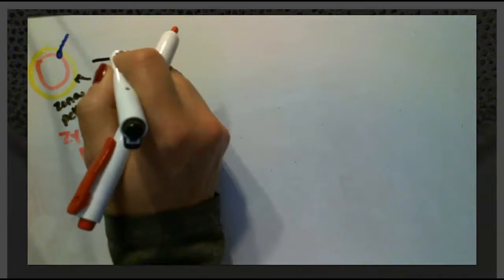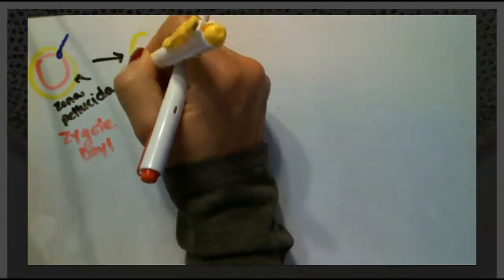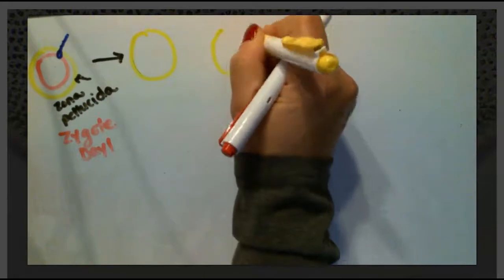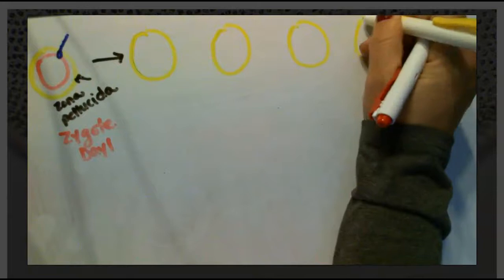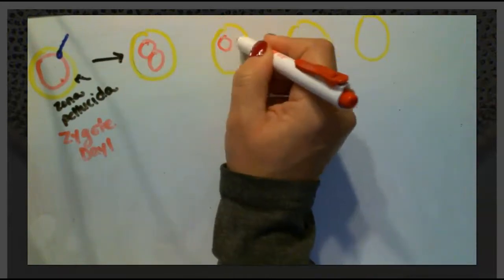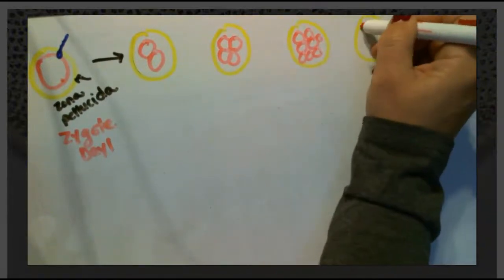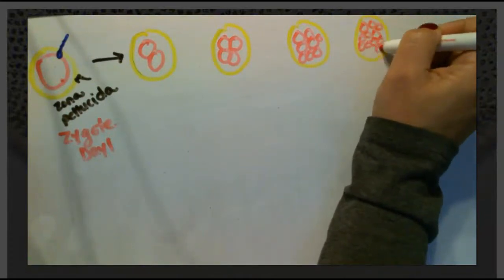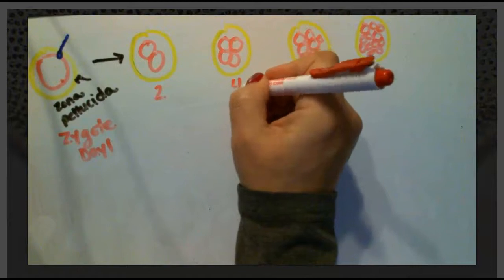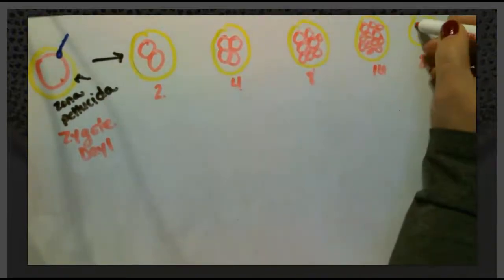What happens next is that the zygote goes through a series of very rapid cell divisions. We still have our zona pellucida here, which will play a very important role later. The cell divides from one into two, two into four, four into eight, eight into sixteen, and sixteen into thirty-two — we just end up with all kinds of cells.